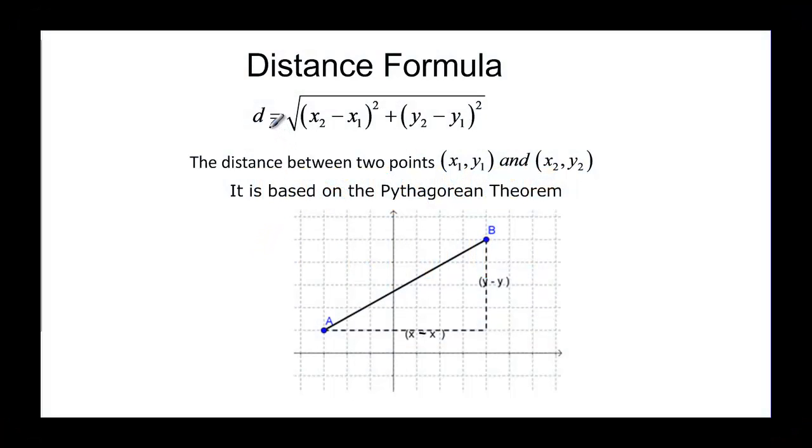We have the distance formula that says that d is equal to x2 minus x1 quantity squared plus y2 minus y1 quantity squared.